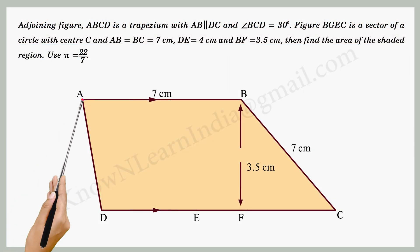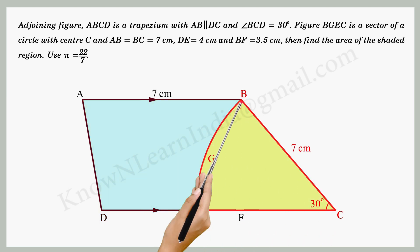Adjoining figure, ABCD is a trapezium with AB parallel to DC and angle BCD equals 30 degrees. In the figure, BGEC is a sector of a circle with center C, and AB equals BC equals 7